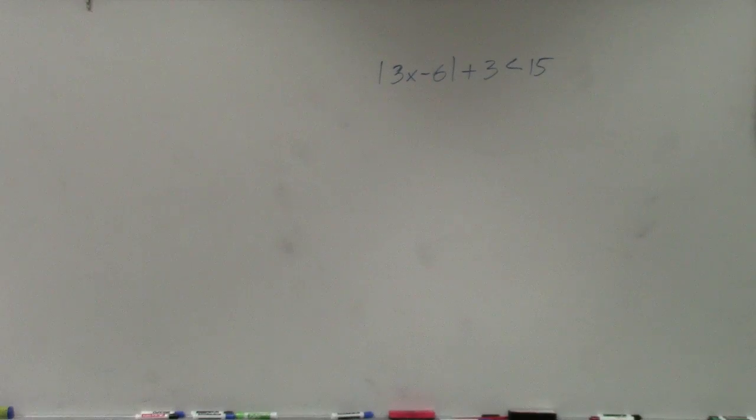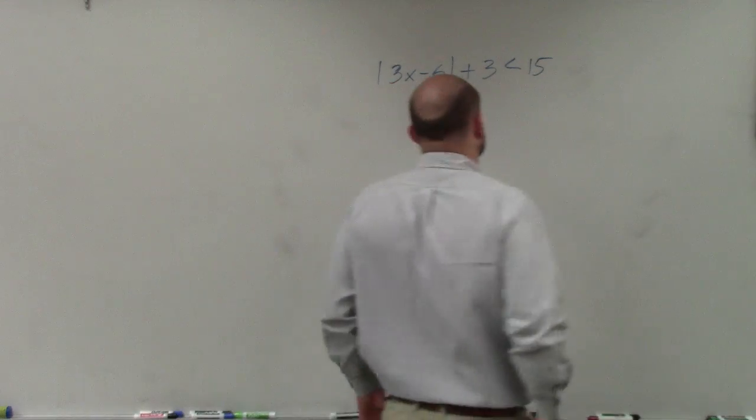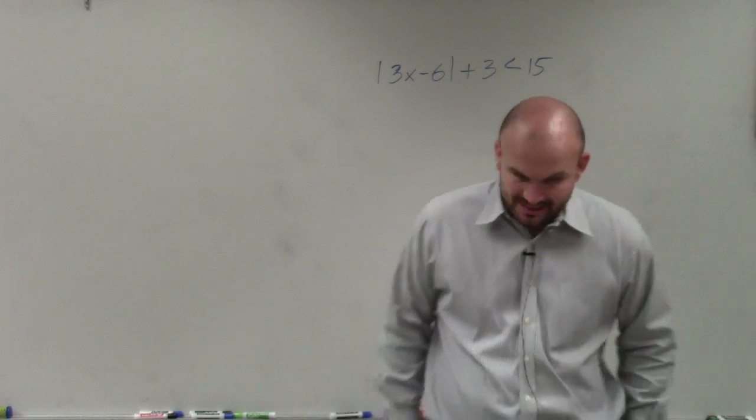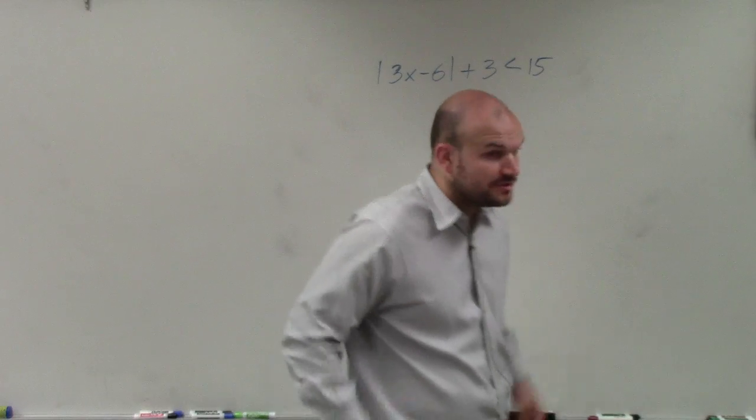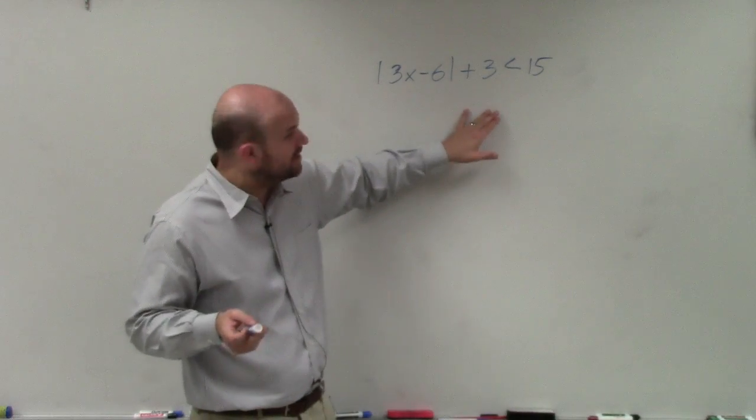And then I'll walk around and answer it. All right. So in this example, ladies and gentlemen, we have |3x - 6| + 3 < 15. So in this case, again, what we need to do, the main important thing, is isolate the variable, right?